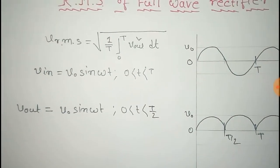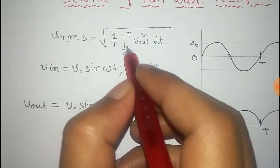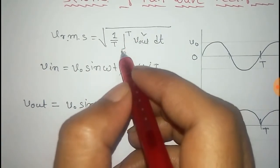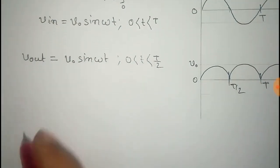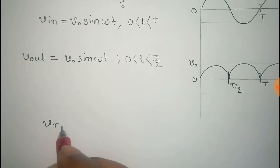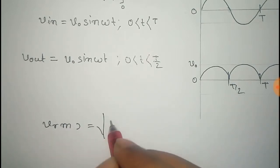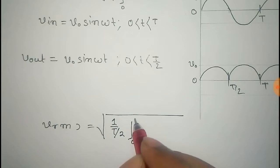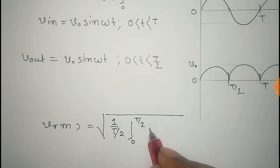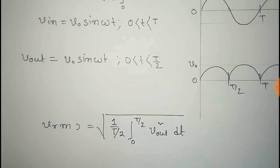To get the RMS value, instead of integrating over the full time period T, we integrate over T/2. So the formula becomes V_rms equals square root of (1/(T/2)) with the limit 0 to T/2 of V_output squared into dt.